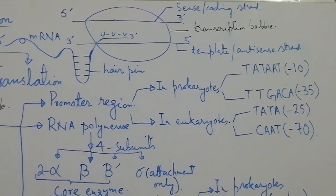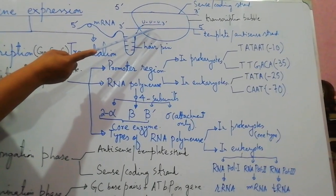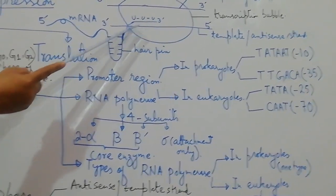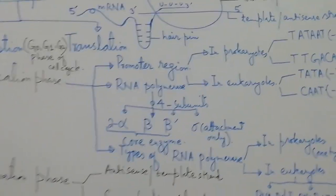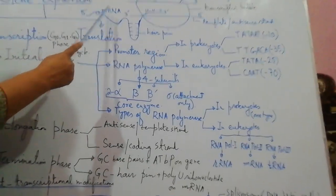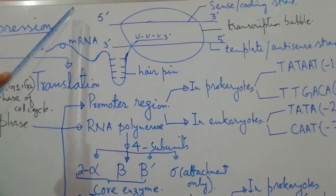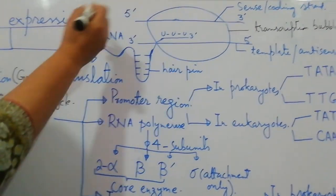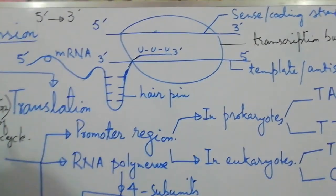The antisense or template strand is so named because it functions as a template for messenger RNA, and also because its nucleotides are opposite or complementary to those on the messenger RNA — that is why it is called the antisense strand. In elongation, RNA polymerase moves from 5' to 3', adding new nucleotides at the 3' end, just as in replication.